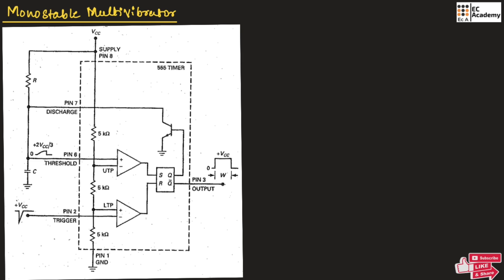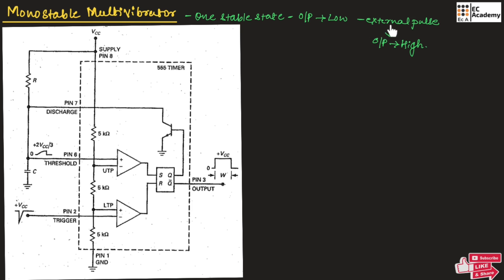If we say monostable, it means this 555 timer will have only one stable state. In this multivibrator, the output will remain low and it needs an external pulse to make the output high. The output will remain low until an external trigger pulse is applied. Once the external trigger pulse is applied, the output will move to high state and then revert back to low after some time. The output will remain high only for that time period, after which it moves to low again.